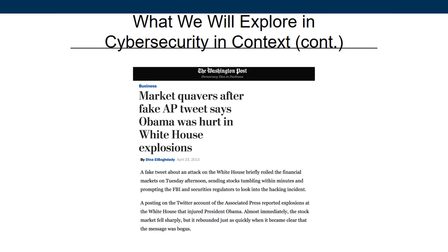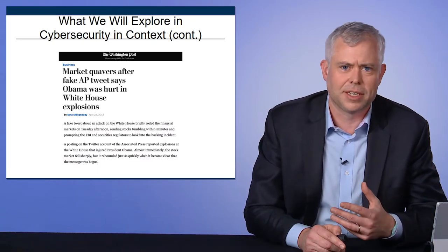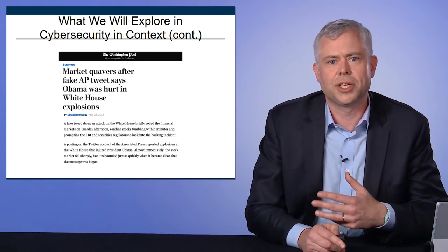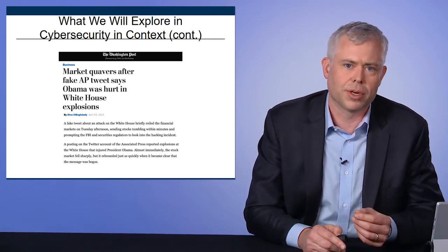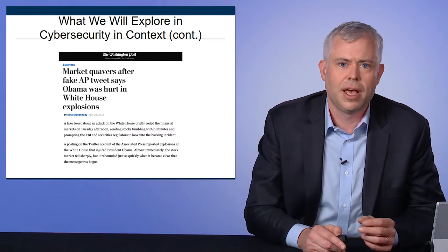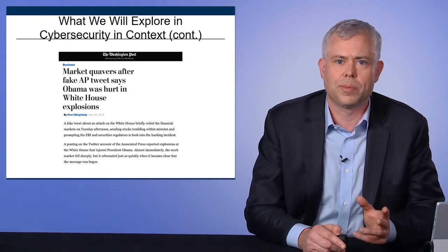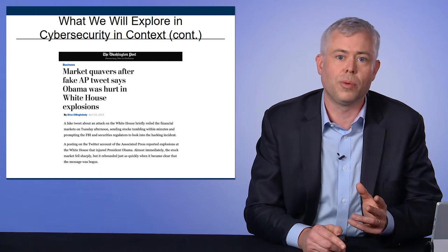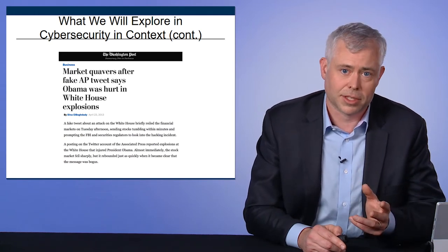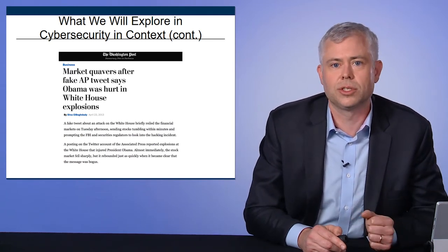We'll also talk about how interconnected we are — how a single fake tweet coming out of the Associated Press's feed could cause the stock market to crash. We're so interconnected now that cybersecurity is becoming among the most important issues. And it's not just about making sure our reputations are secure. It's also about making sure our markets and our institutions work.